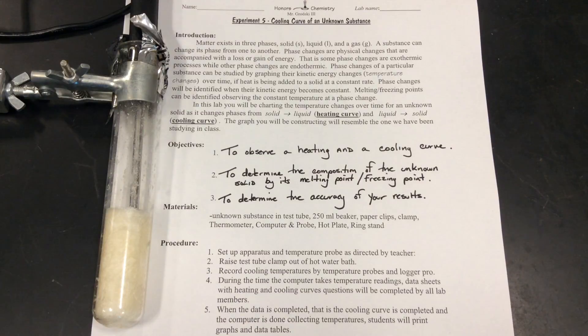In this lab, we're going to determine the composition of the solid you see in the test tube by determining its melting or freezing point using a cooling or heating curve. We're going to melt this solid and freeze this solid, making it go from solid to liquid and liquid to gas by applying heat to it in a water bath and then cooling it. By measuring the temperature of this solid as it goes through the phase changes, we're going to determine the phase change temperature.